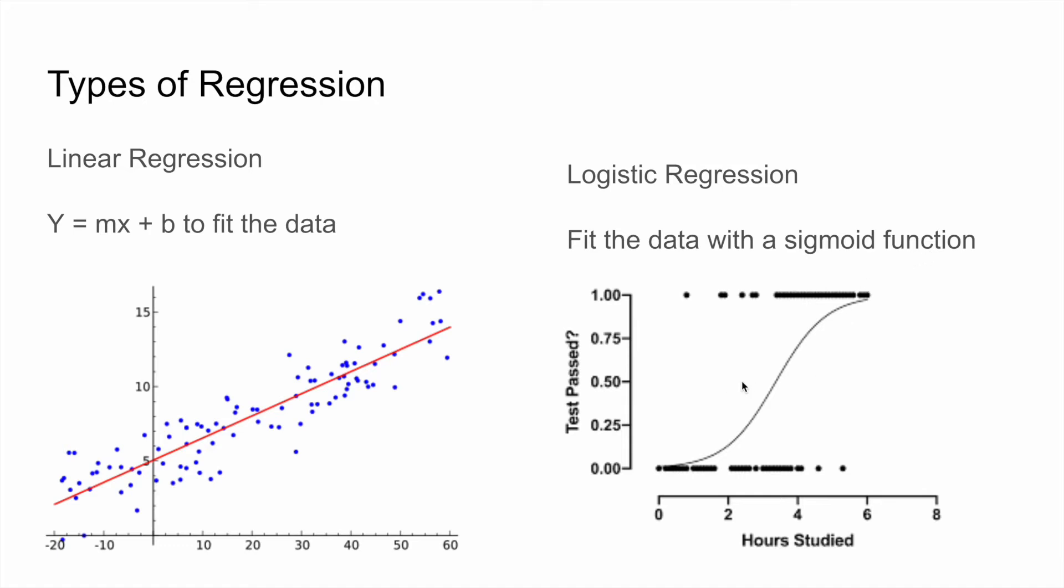This is called a sigmoid function. But what it does is just the general shape of the graph. What I want you to pay attention to is how this function is doing a much better job of fitting to the data. As opposed to a straight line, that is.